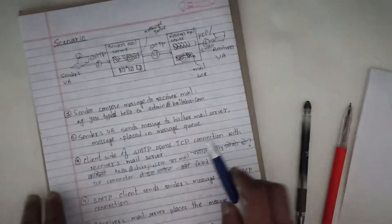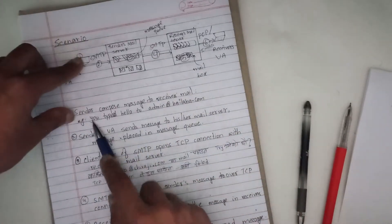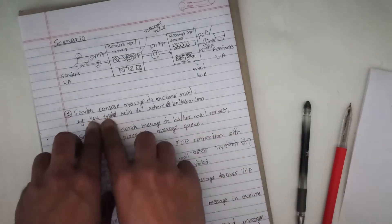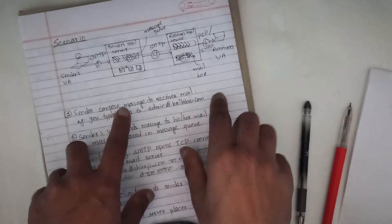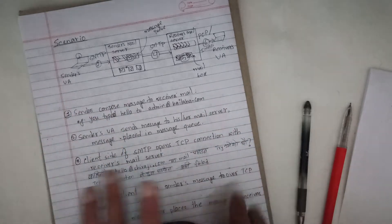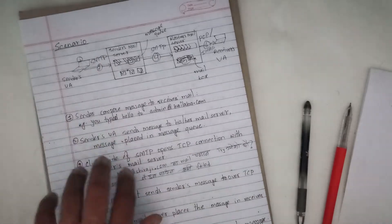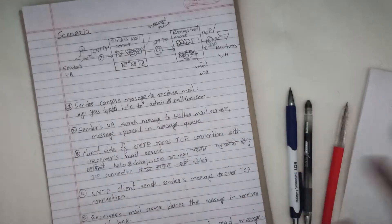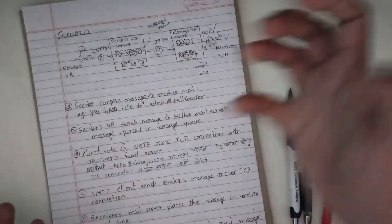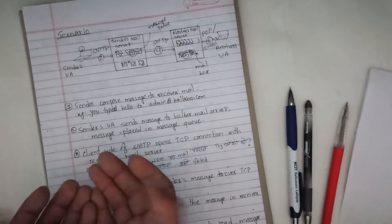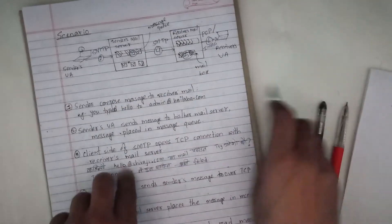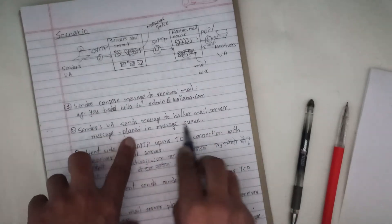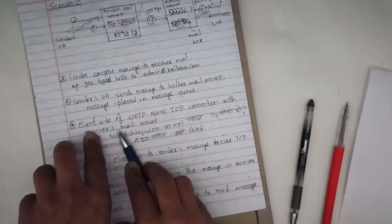Step 1: The sender composes a message to the receiver's email — for example, typing 'hello' to admin at example dot com. Step 2: The sender's user agent sends the message to the sender's mail server, where it is placed in the message queue. Step 3: The client side of SMTP opens a TCP connection.